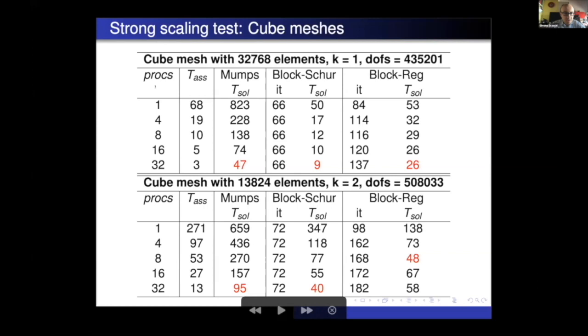So this first test is a strong scaling test on the cube meshes with low order of approximation k equal one and then k equal two. The number of processors increased from one to 32. Here is a strong scaling test. That means that the mesh is fixed. So the number of degrees of freedom is fixed, about 400,000. And we increase the number of processors, and we see if the GMRES iterations, in case of iterative solvers, remain almost bounded, increasing the number of processors. And if the solution, the CPU time reduces, increasing the processor. And we compare the two iterative solvers with our gold standard, which is MUMPS.